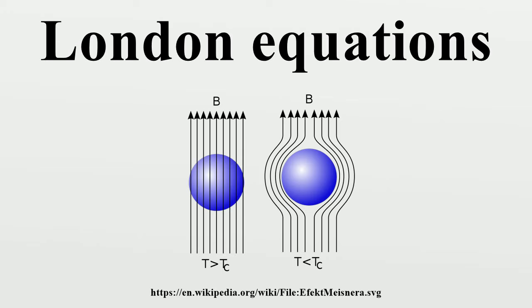To this end, the London brothers imagined electrons as if they were free electrons under the influence of a uniform external electric field. According to the Lorentz force law these electrons should encounter a uniform force, and thus they should in fact accelerate uniformly.